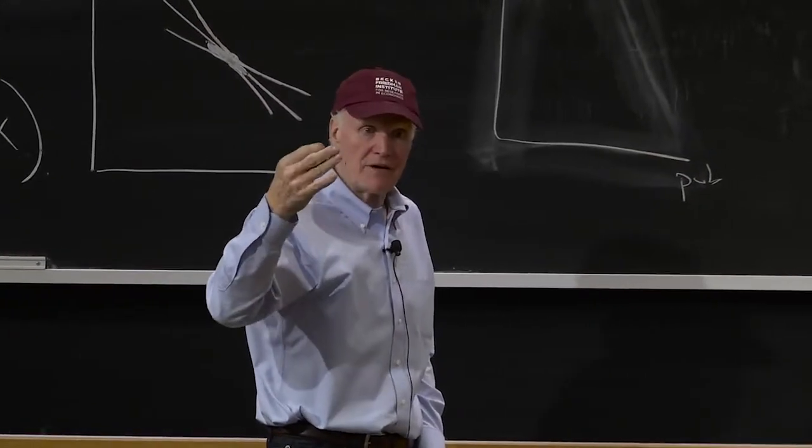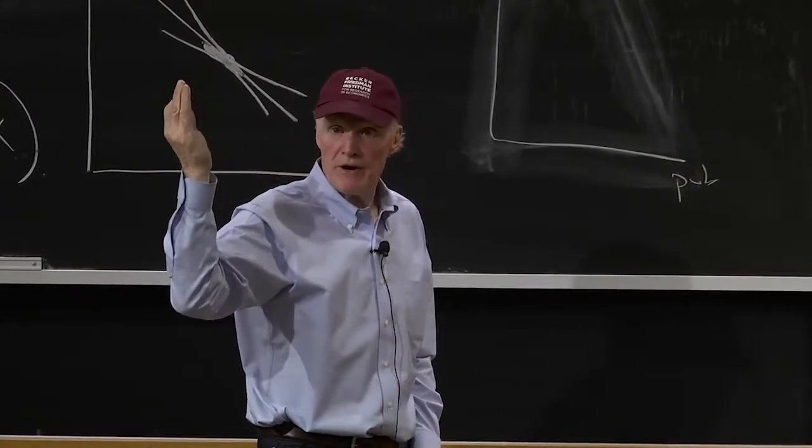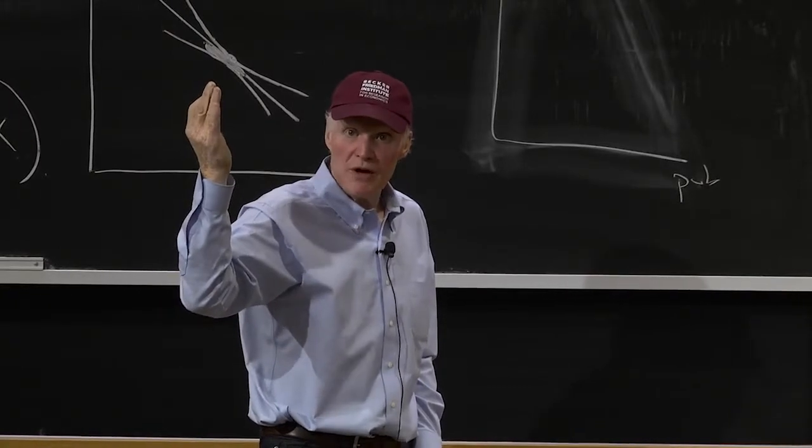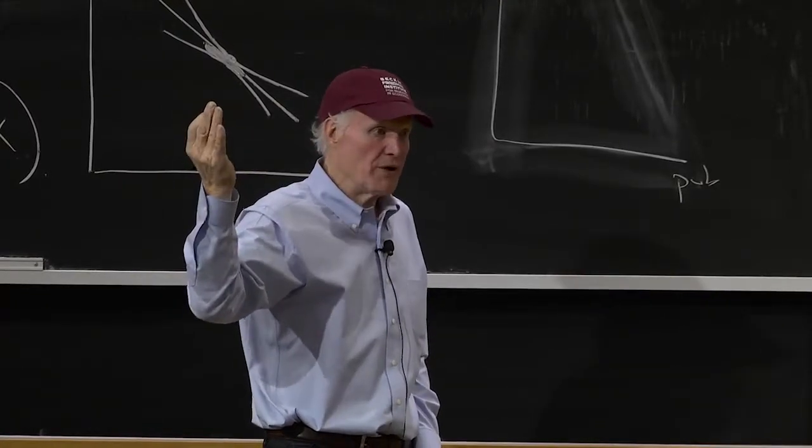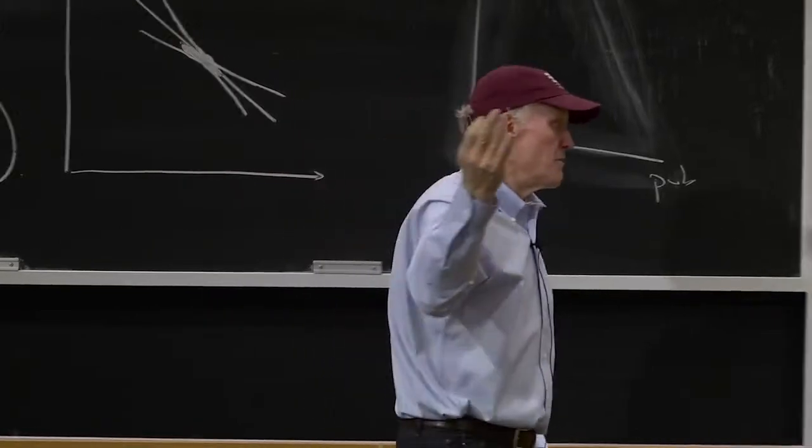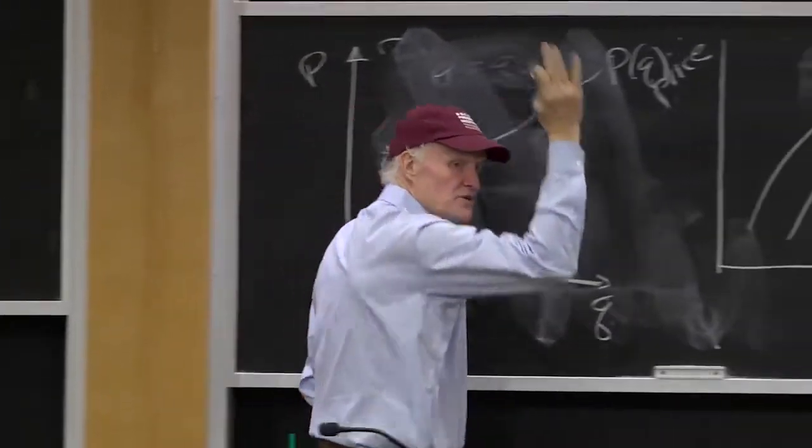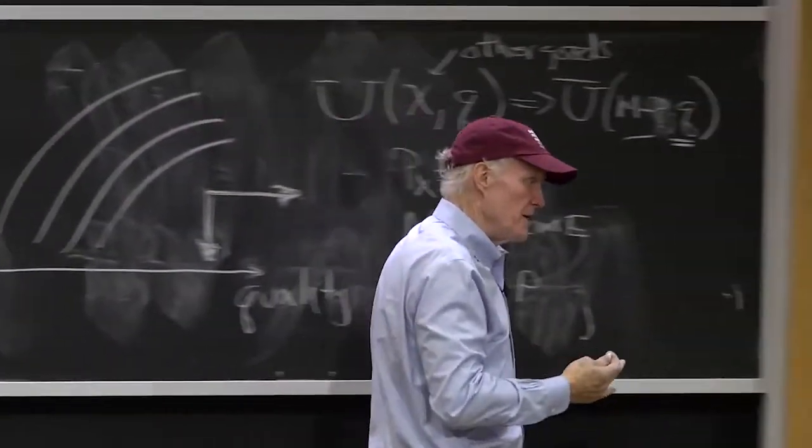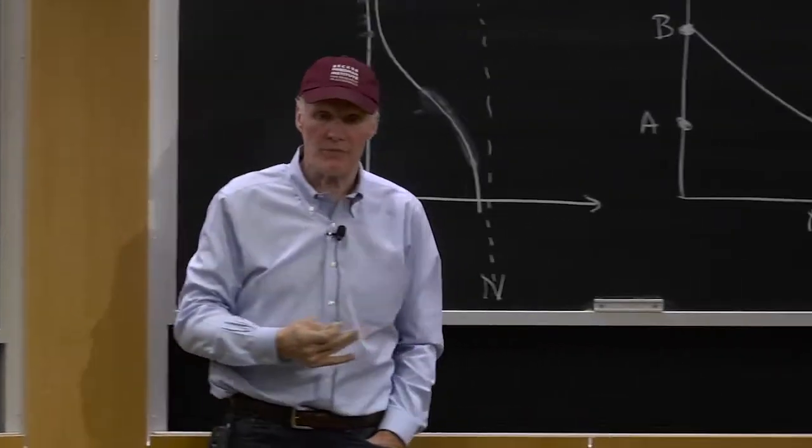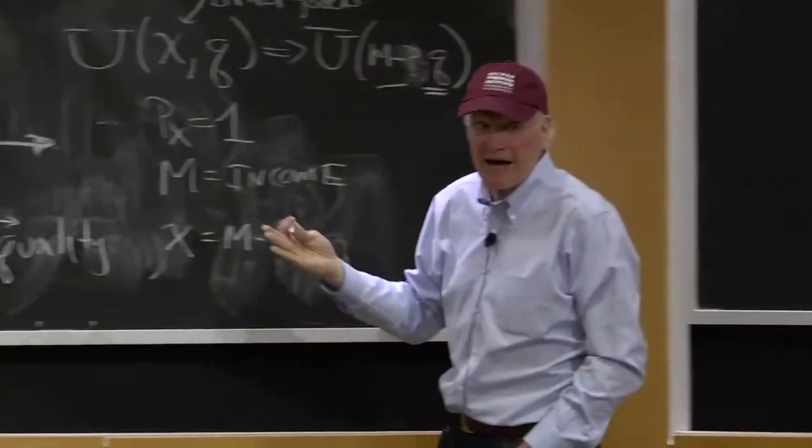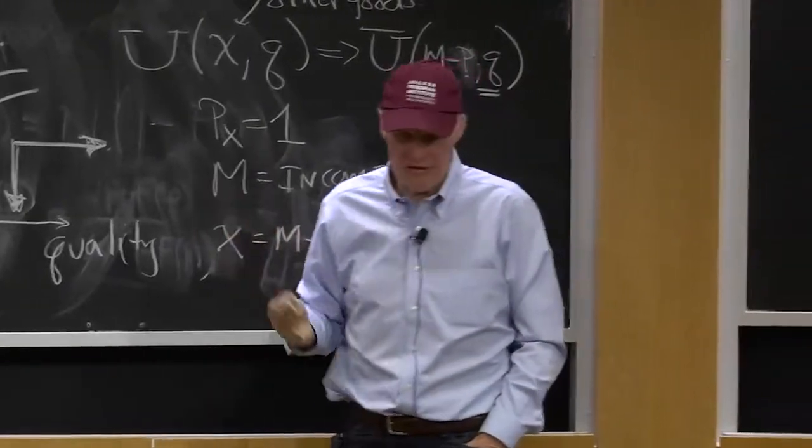If there were downward sloping segments, we could ignore them, right? Nobody's going to choose a point where they can get more quality at a lower price. So we might as well assume the equilibrium one is upward sloping because we're never going to have anybody located on the downward sloping parts. We would never see the downward sloping parts. They would be missing from our data.